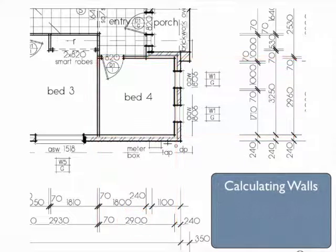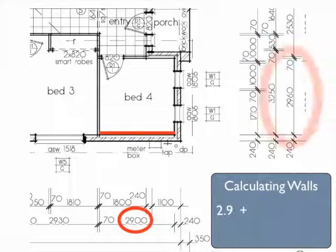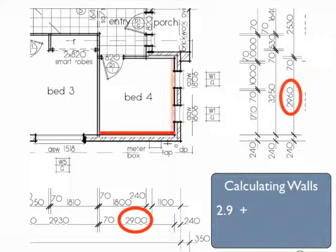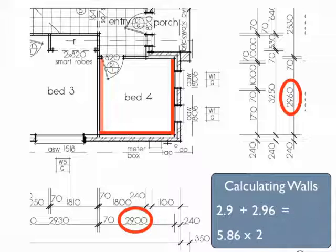Now to calculate walls. First we see that one wall is 2.9 and the other is 2.96. This adds up to 5.86, but that's only 2 walls. Now if we multiply that by 2, it gives us the other 2 walls, making it 11.72 metres perimeter.